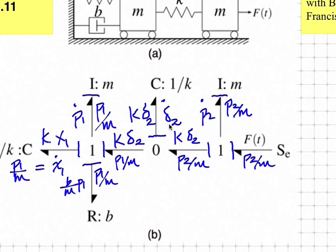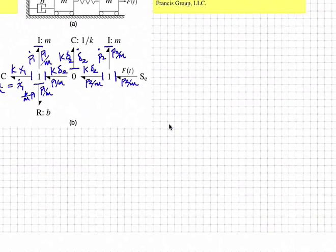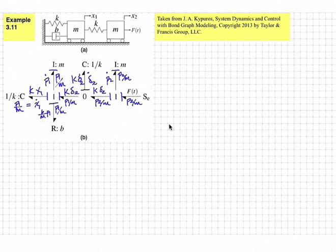We now know all the efforts and flows on all of our bonds, which allows us to derive the differential equations by applying the secondary condition at each junction. We need differential equations for x1 dot, p1 dot, delta 2 dot, and p2 dot — one for each energy storing element in integral causality. Starting on the left-hand side, we already have x1 dot, so let's derive the differential equation for p1.